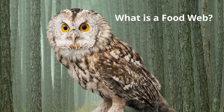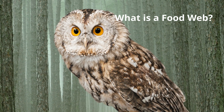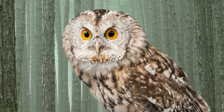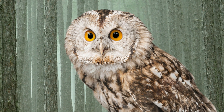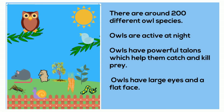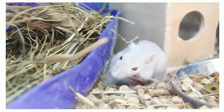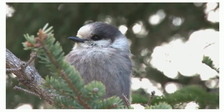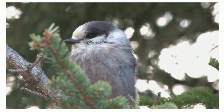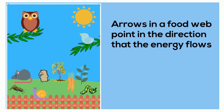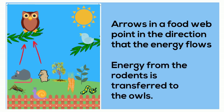Here's an owl in its ecosystem. You will notice it is missing arrows, so let's start adding the arrows. An owl likes to eat rodents like rats and shrews, and occasionally small birds. The arrows point in the direction of the transfer of energy — the energy of the rodents is transferred to the owl, so the arrows are pointed in that direction. The bird's energy is transferred to the owl, so the arrows point towards the owl.